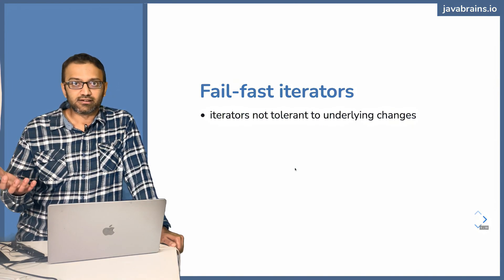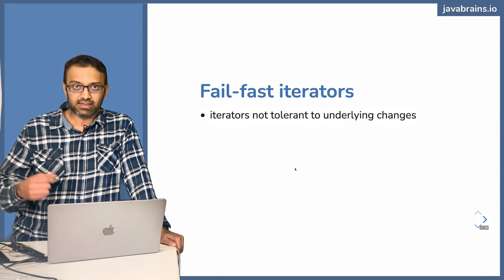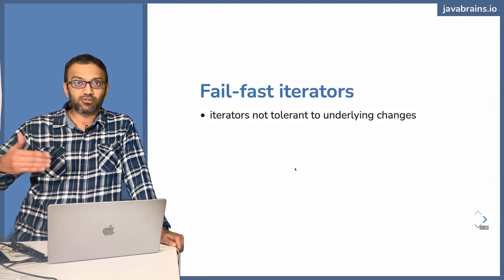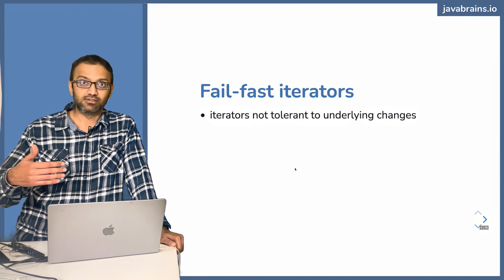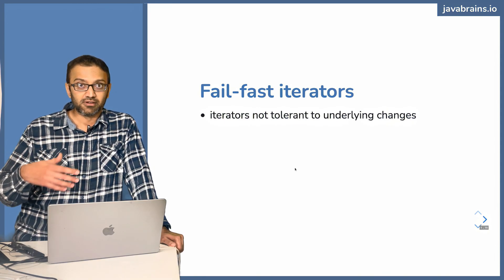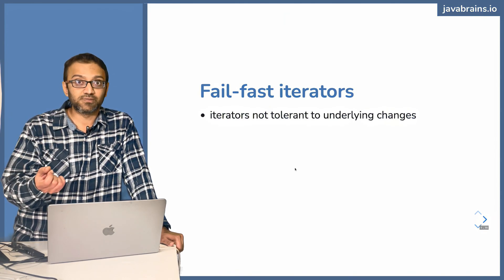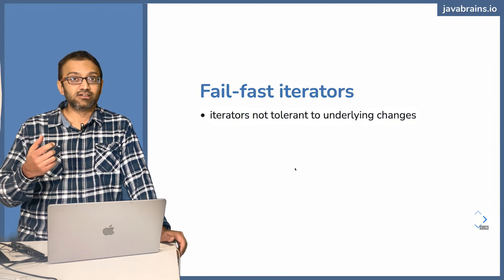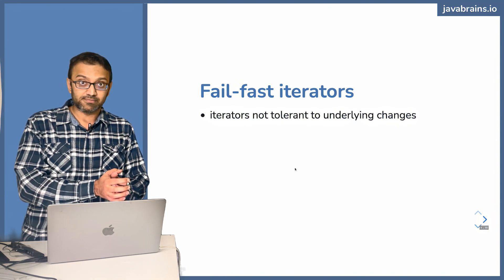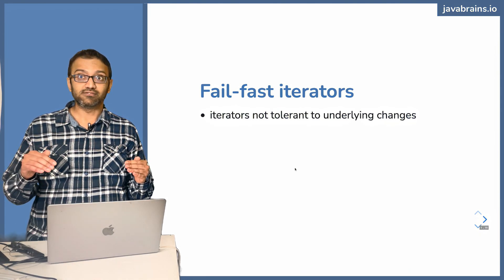When you get an iterator from a collection, you're basically saying: here is the state of my collection, and here is my iterator. This iterator instance knows how to iterate over this collection — it knows what's in the collection and how to go from one element to the other. Now imagine while you're iterating over it, you modify the underlying collection — you insert an object somewhere in between or remove an object. What ends up happening is the collection has a different state than what it was when the iterator was created.